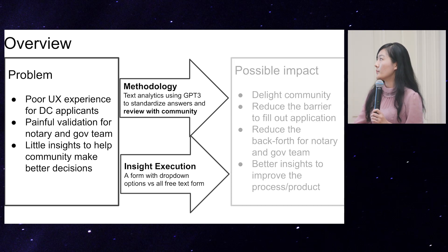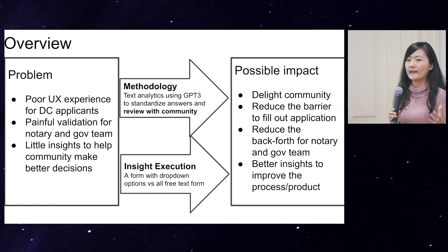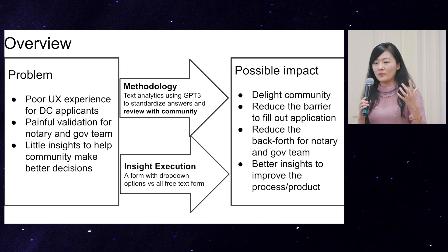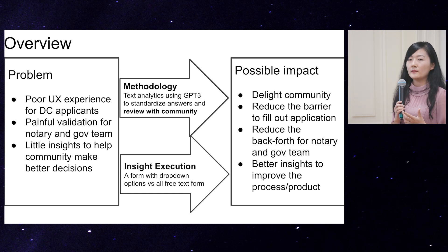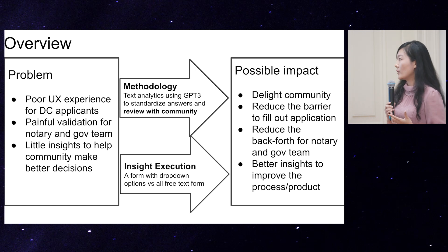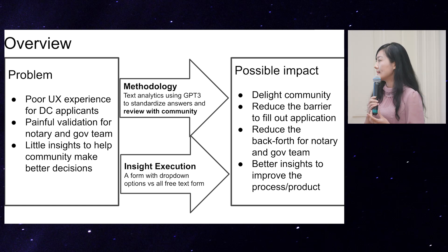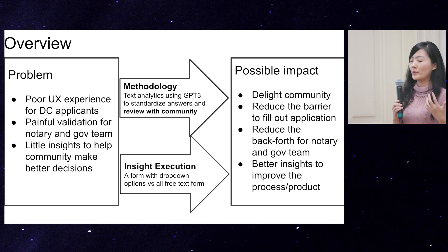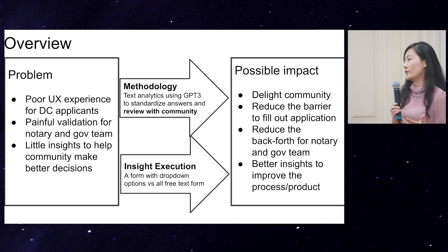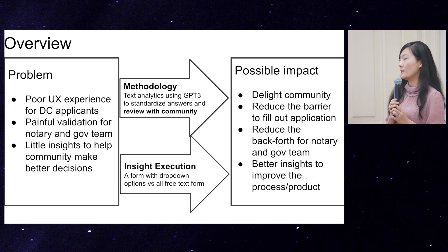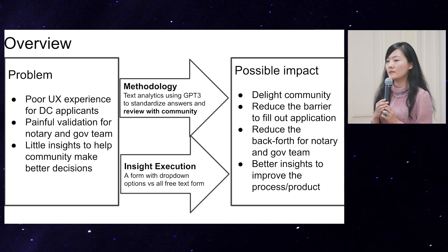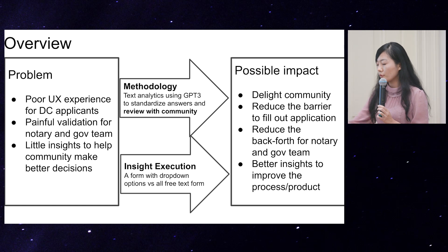The possible impact is: first, delight the community — we know GitHub is not the ideal solution, but in this transition period we still want to make the application form as easy to use as possible so it doesn't become a blocker for clients. Second, we reduce the back and forth for the notary and governance team. Lastly, it will help the Filecoin network get useful insights to improve our products and processes, so we can actually make the network even better.